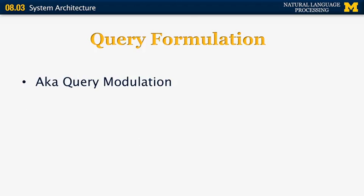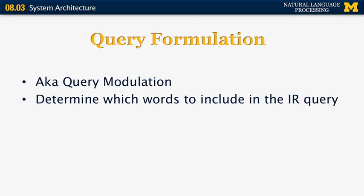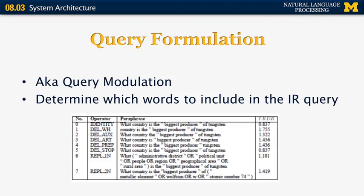Query formulation, or query modulation, is essentially the process by which a natural language question is converted into an information retrieval query. Here are some examples from one of the Michigan papers. The question 'what country is the biggest producer of tungsten?' is then converted into different queries depending on the target search engine.